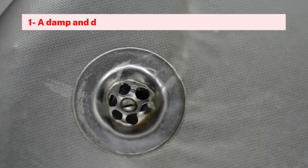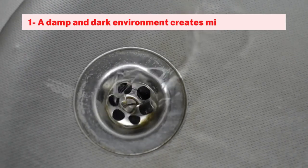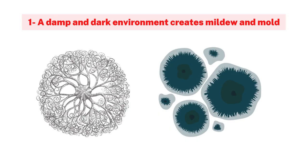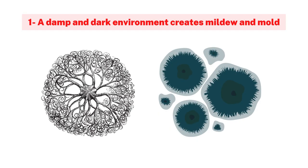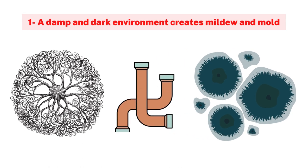Reason 1. A damp and dark environment creates mildew and mold. Mildew and mold are both fungi. This fungus thrives in dark, moist environments. As a result, they use pipes to make a living.